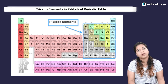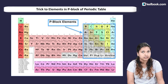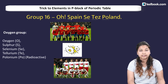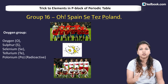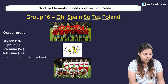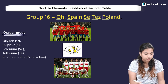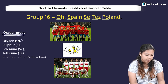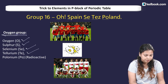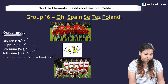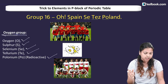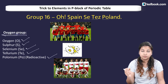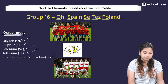Let's talk about group 16. We are coming to group 16. Which elements are in group 16? There is the oxygen group in group 16. The elements are oxygen, sulfur, selenium, tellurium and polonium.